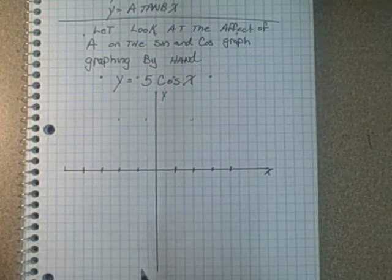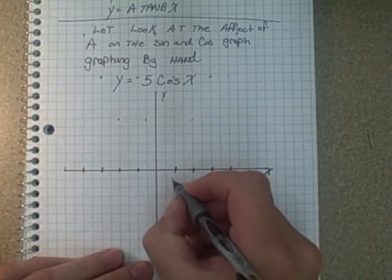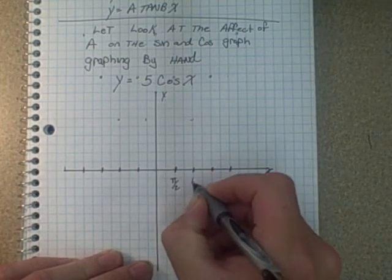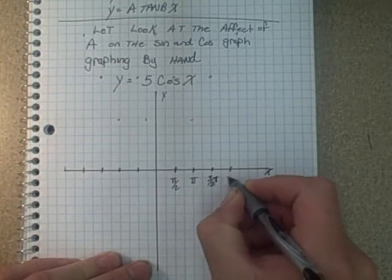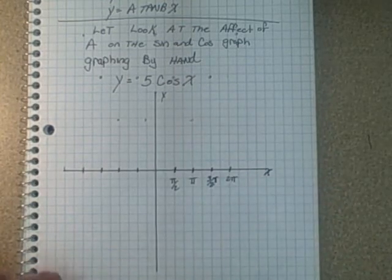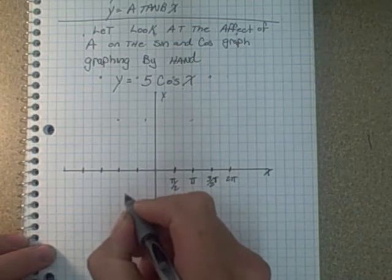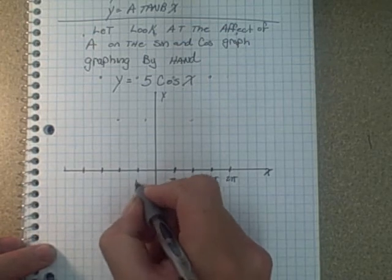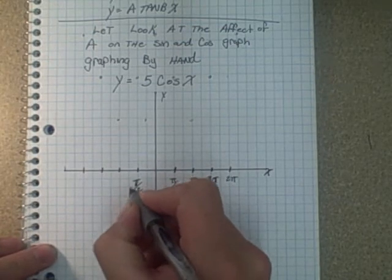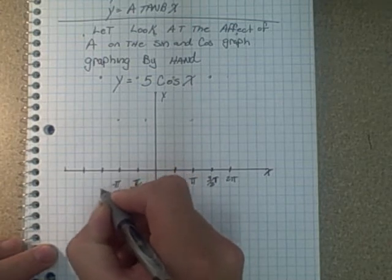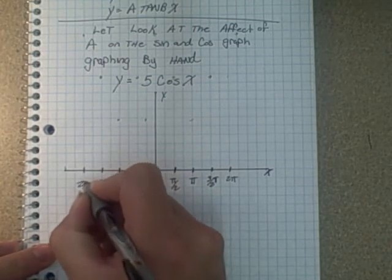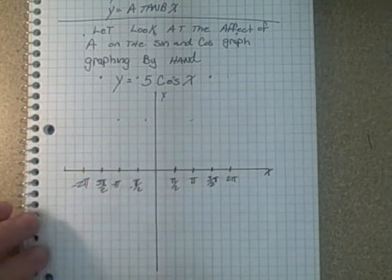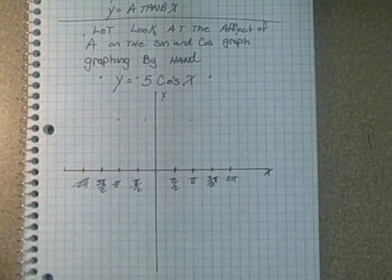And to draw the same shape of a regular cos graph. So you still have pi over 2, pi, 3 pi over 2, and 2 pi on the positive axis side. And you still have the same here on the negative side. And we're going with radians of course.